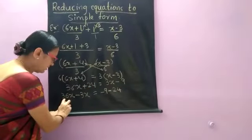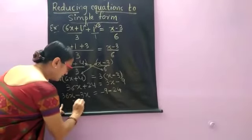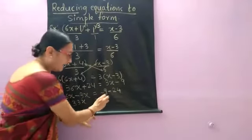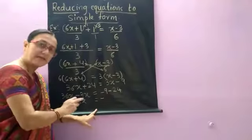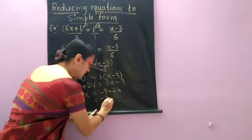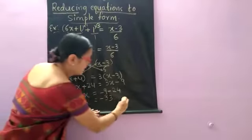Plus 24 shifting that side becomes minus 24 now. Now this is what here? 36 minus 3 is 33x equal to 33x equal to. What is this here? Both are negative. You have to add them with the negative sign. 24 plus 9 is how much? 33.